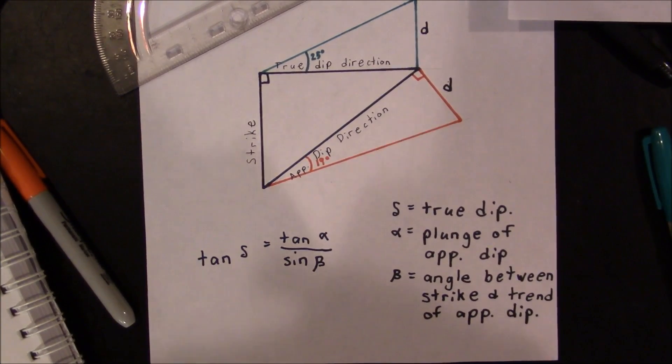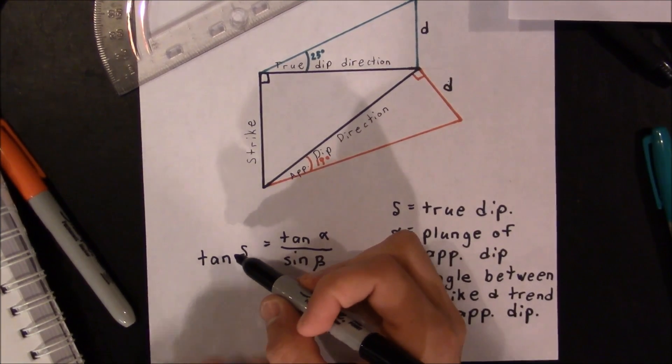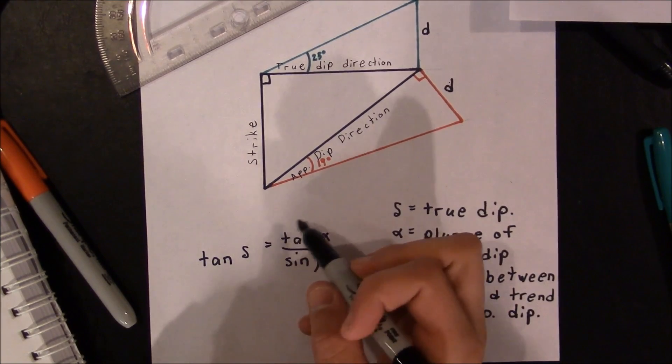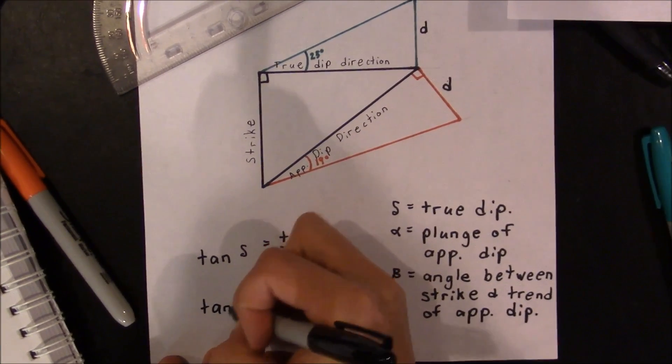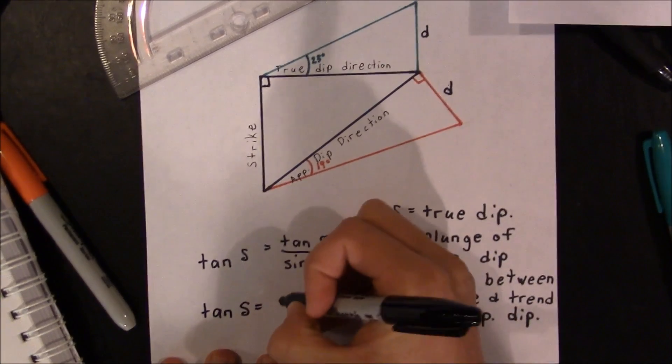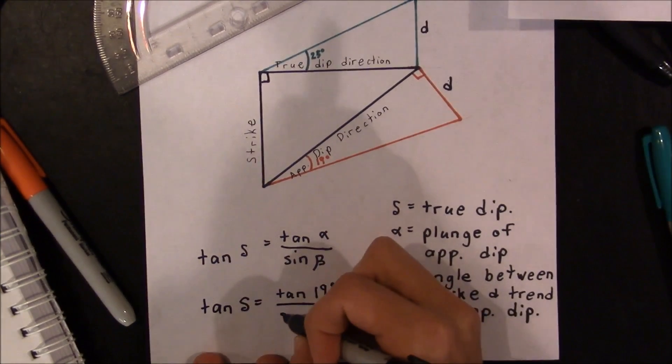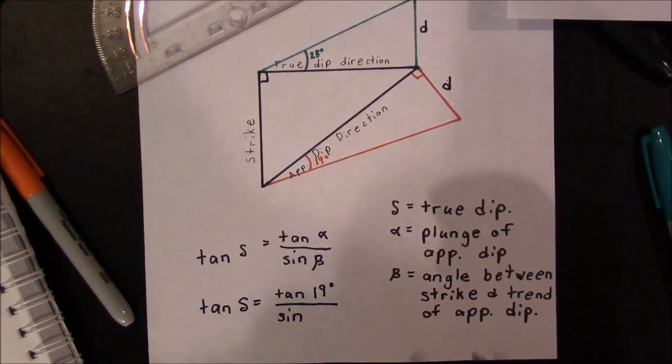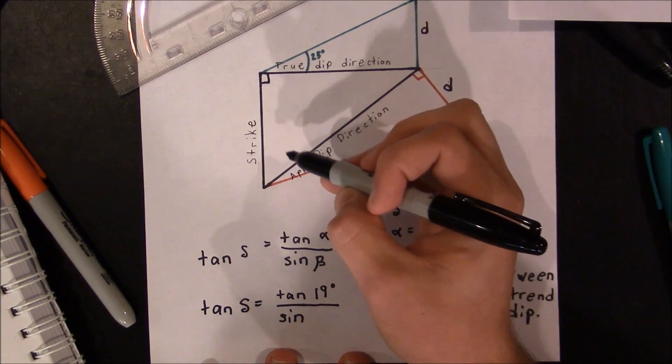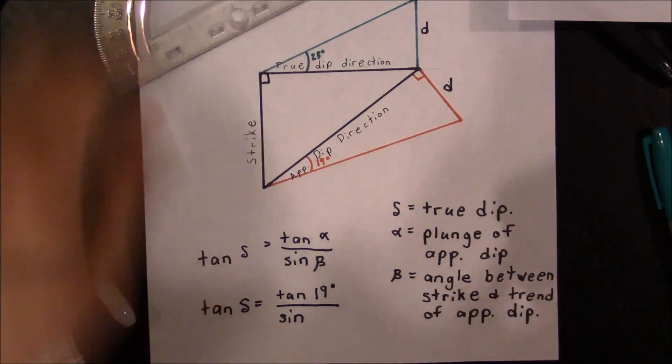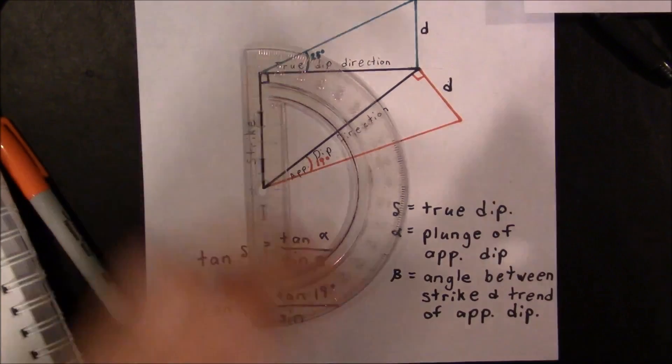and beta is the angle between the strike of the plane and the trend of the apparent dip. Okay, so these are what all the different symbols mean, and in our particular case, we are trying to solve for the true dip. We're trying to solve for delta. What we have is we have alpha, which is the plunge of the apparent dip. So we can say that tangent of delta is equal to the tangent of 19 degrees divided by the sine,